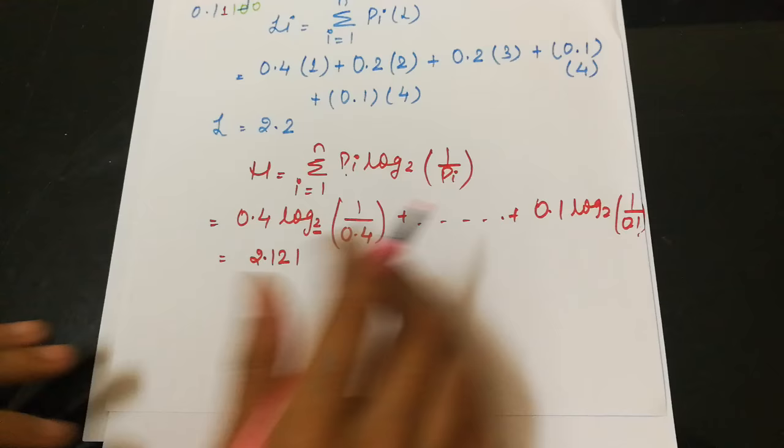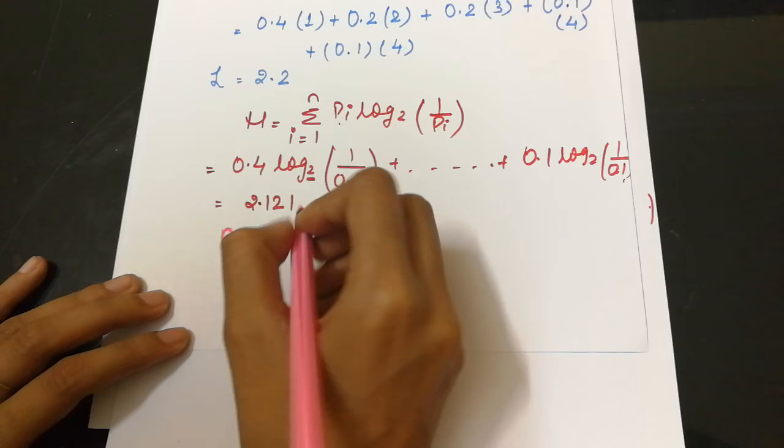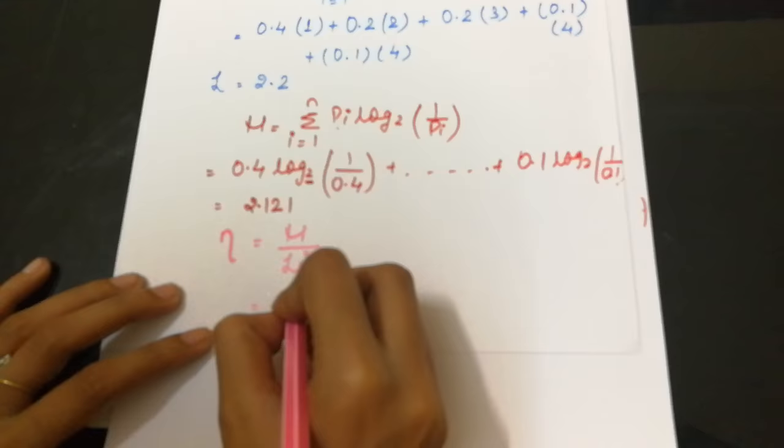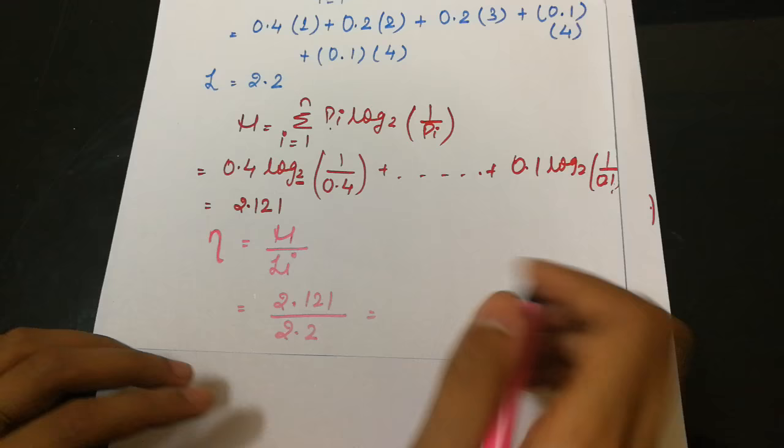Now the efficiency is given as eta. Efficiency is denoted by eta, which is given as entropy divided by length, which is 2.121 divided by 2.2. On calculation of this, you get 0.96.